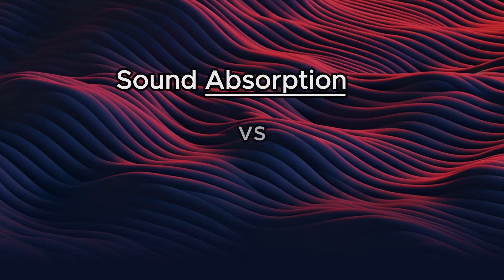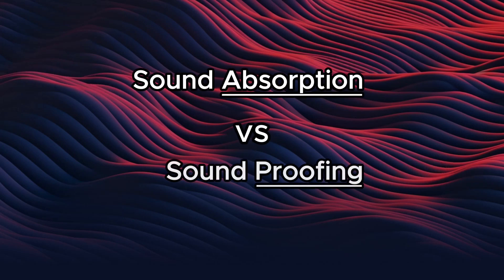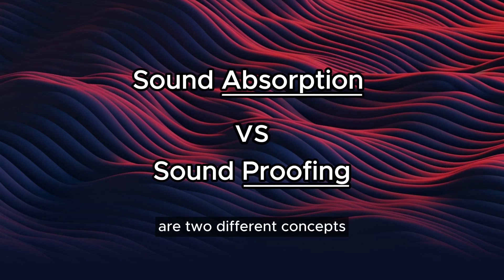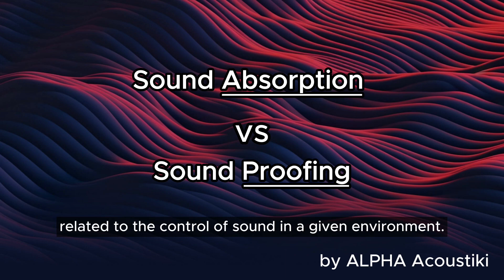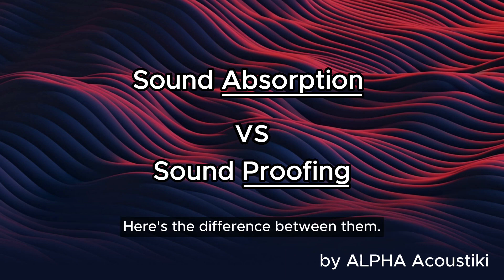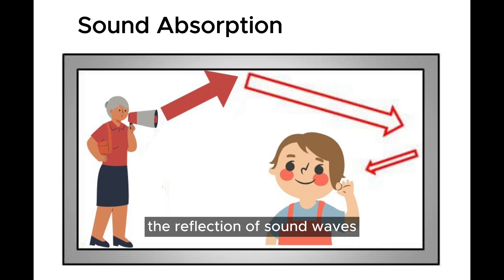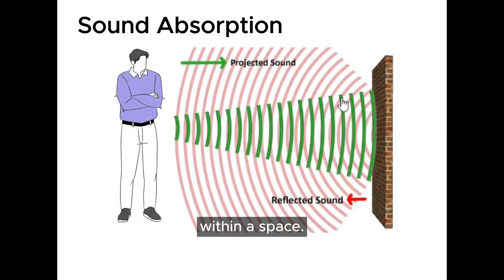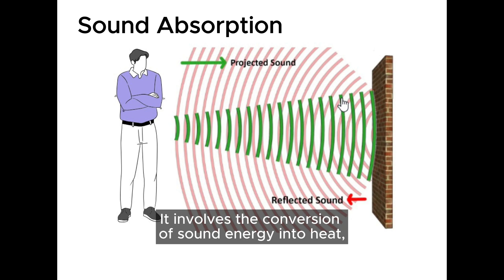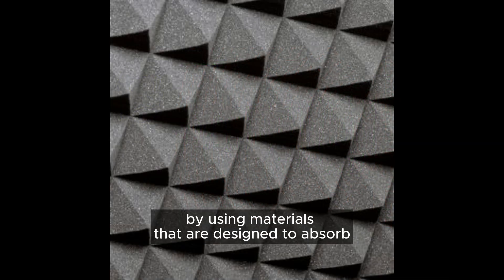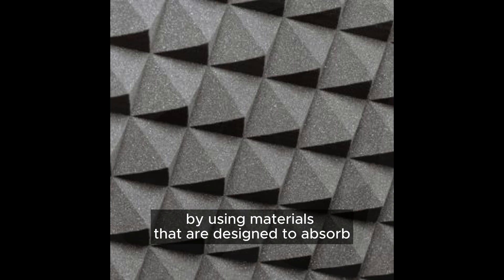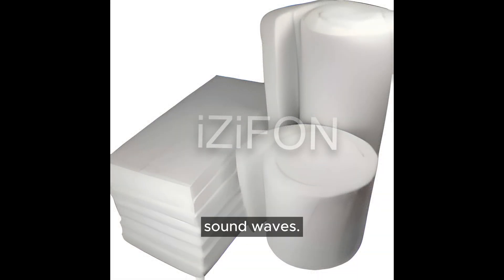Sound absorption and sound insulation are two different concepts related to the control of sound in a given environment. Here's the difference between them. Sound absorption refers to the process of reducing the reflection of sound waves within a space. It involves the conversion of sound energy into heat, typically by using materials that are designed to absorb sound waves.